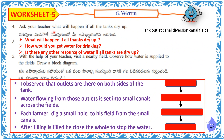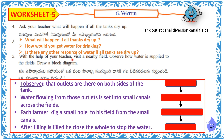Ask your teacher: What will happen if all the tanks dry up? How would you get water for drinking? Is there any other source of water if all tanks are dry? With the help of your teacher, visit any nearby field and observe how water is supplied to the fields. Draw a block diagram.